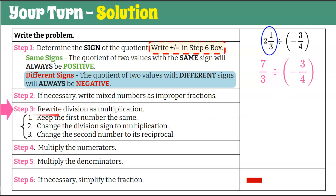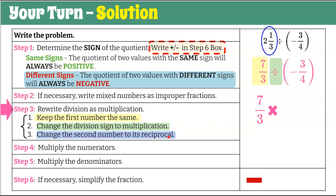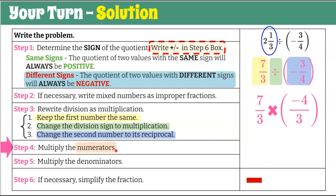Step three: rewrite division as multiplication. Keep the first number the same — seven-thirds. Change the division sign to multiplication. Change the second number to its reciprocal: negative three-fourths becomes negative four-thirds, flipping the numerator and denominator and keeping the negative sign with the numerator. Step four: multiply the numerators — seven times negative four is negative 28.